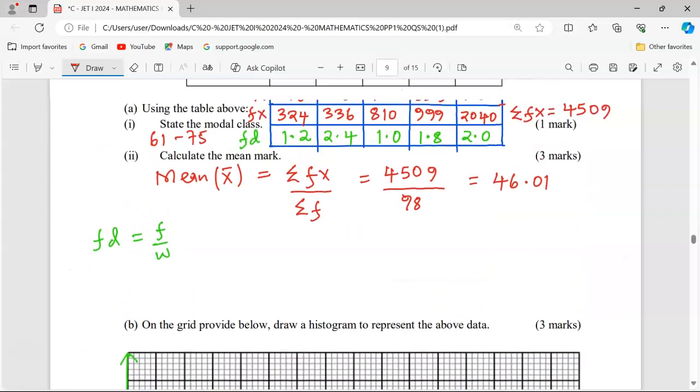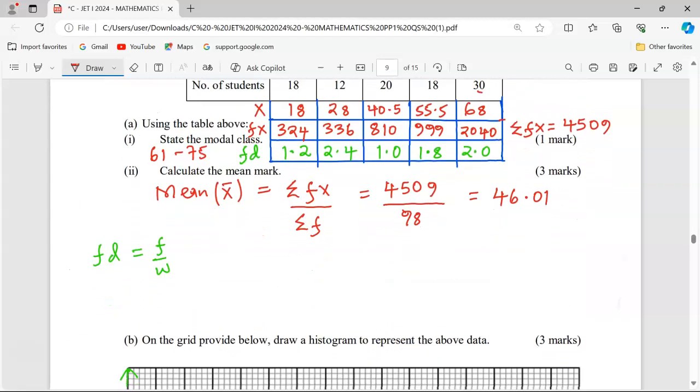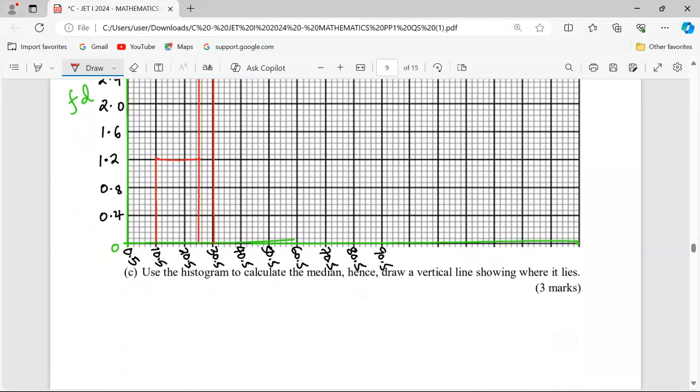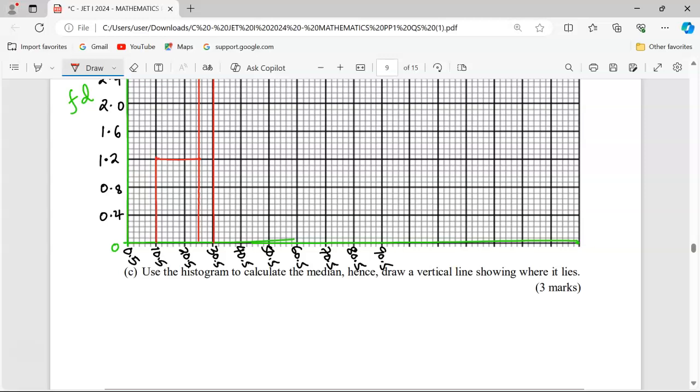From 30.5, we shall move all the way to 50.5, and the height is 1. 1 is exactly between 0.8 and 1.2, so the height of 1 is here. Then we have the class reaching 50.5. That is the third bar.